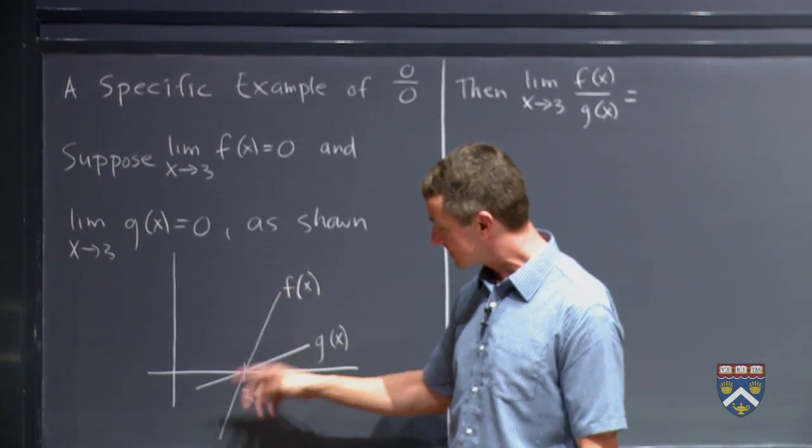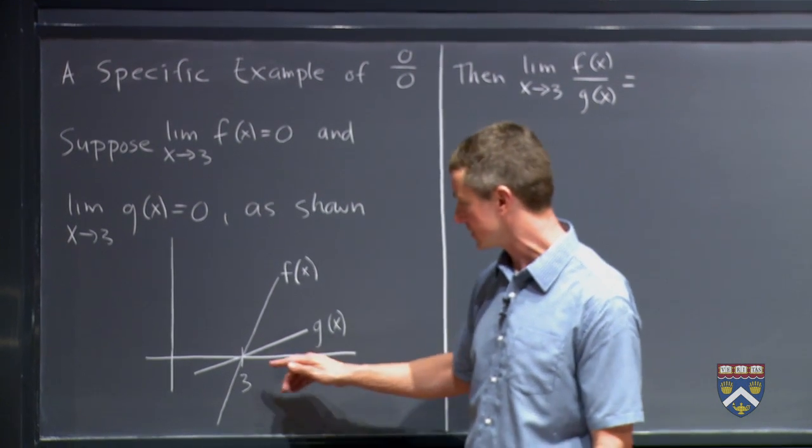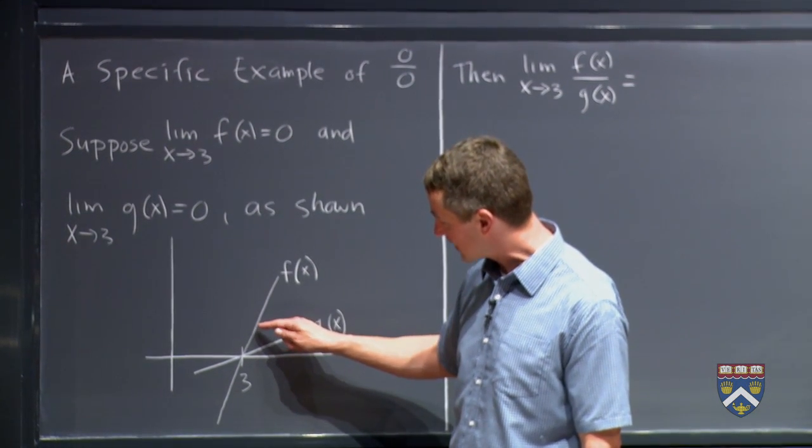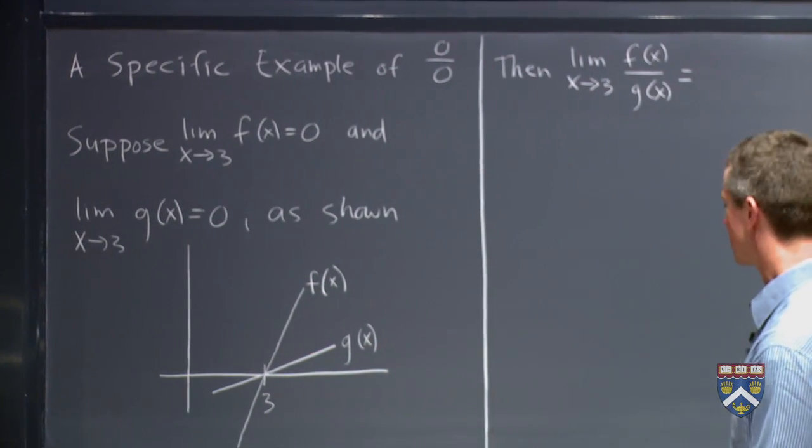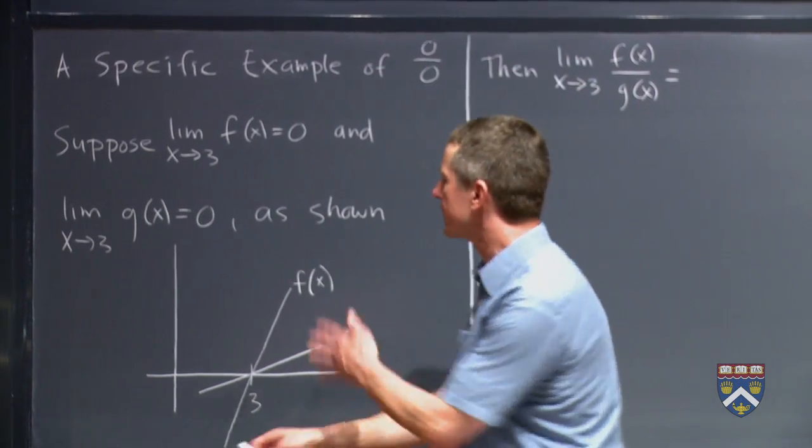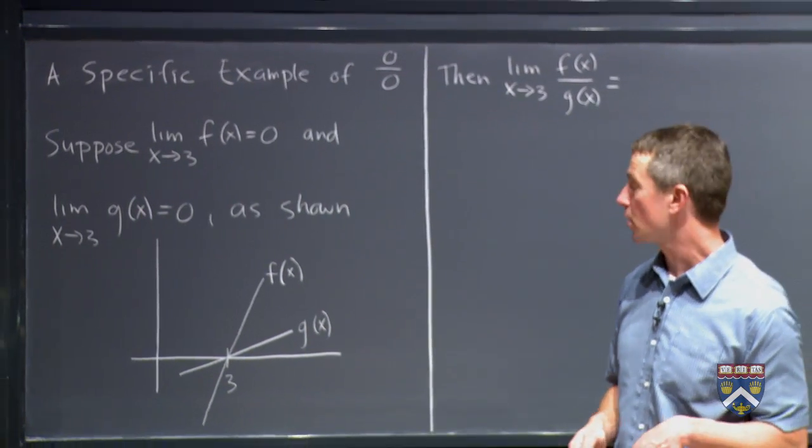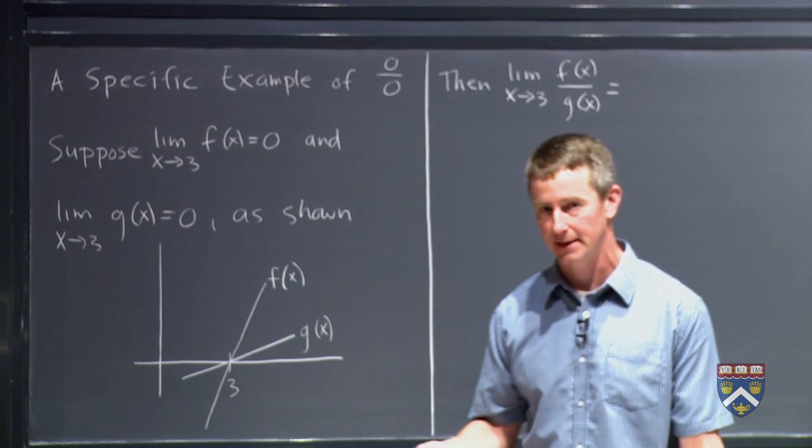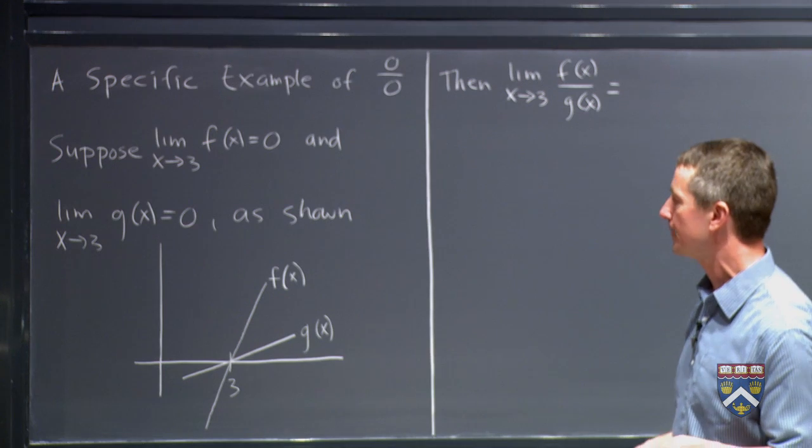I've tried to draw them similar to how it looked in the applet for those specific functions. So I've tried to draw f to be about 4 times as steep as g near x equals 3. And I'm imagining that we've really zoomed in a lot here so that the graphs really do look almost linear, which is what happens to any differentiable function when we zoom in really tightly on it.